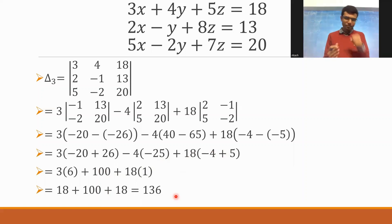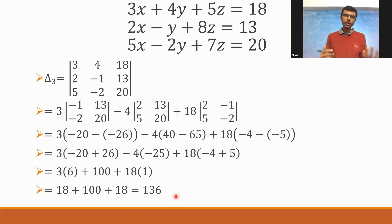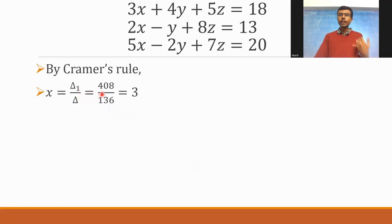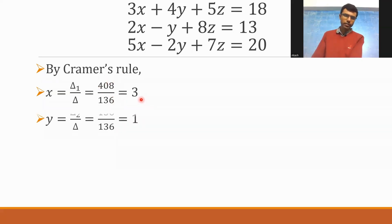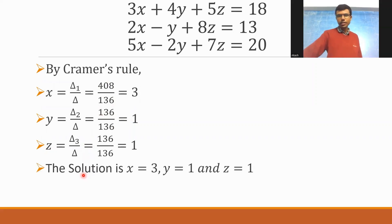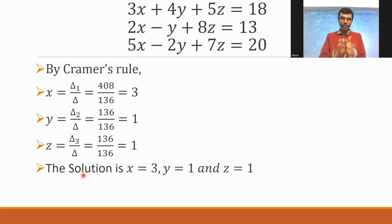We are done finding delta, delta 1, delta 2, and delta 3. Now we find x, y, z. By Cramer's Rule: x = delta 1 / delta = 408 / 136 = 3. Y = delta 2 / delta = 136 / 136 = 1. Z = delta 3 / delta = 136 / 136 = 1. Hence, the solution is x = 3, y = 1, and z = 1.